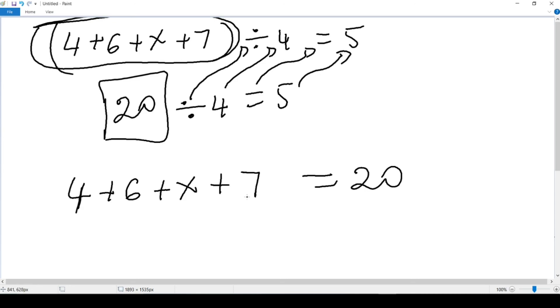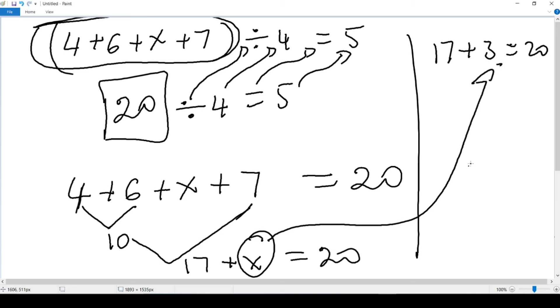Now 10 plus 7 that's 17. Now 17 plus X should give me 20. So 17 plus what number is equal to 20? 17 plus 3 equals 20. So here my X equals 3, and I just write X equals 3.